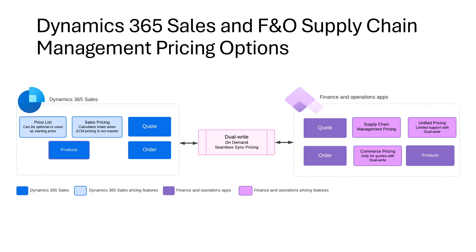There is also the option to make Sales the pricing master. However, our recommendation is for F&O to be the pricing master so that all prices, discounting rules, and so on will be configured in that system. Within Finance and Operations, you have several options for the pricing engine: Supply Chain Management pricing, the new Supply Chain Management Unified pricing that enables omnichannel and attribute-based pricing rules, and Commerce pricing.